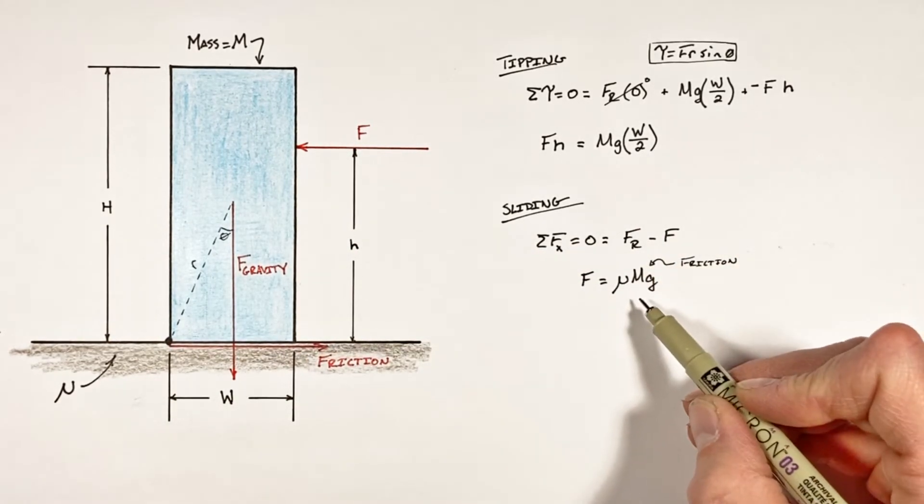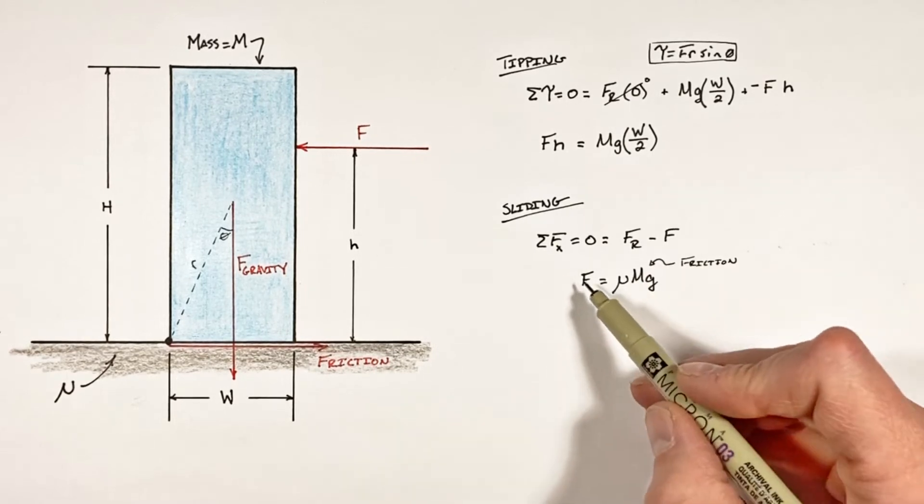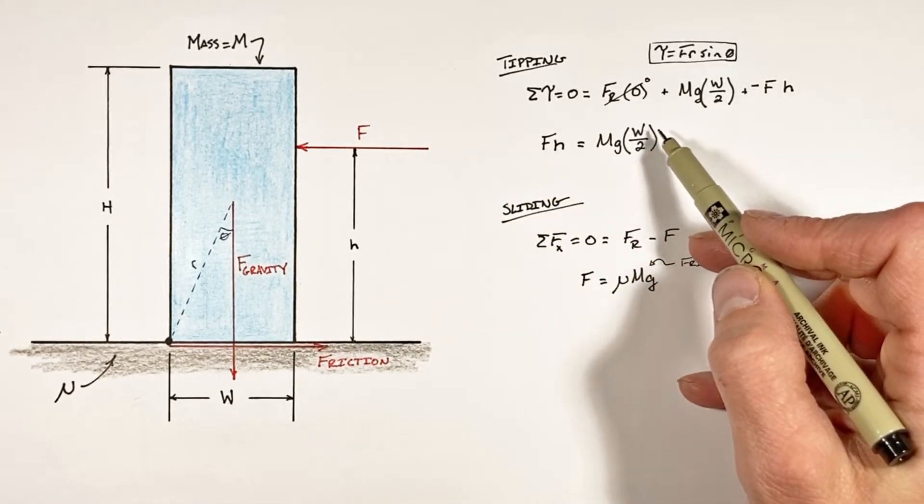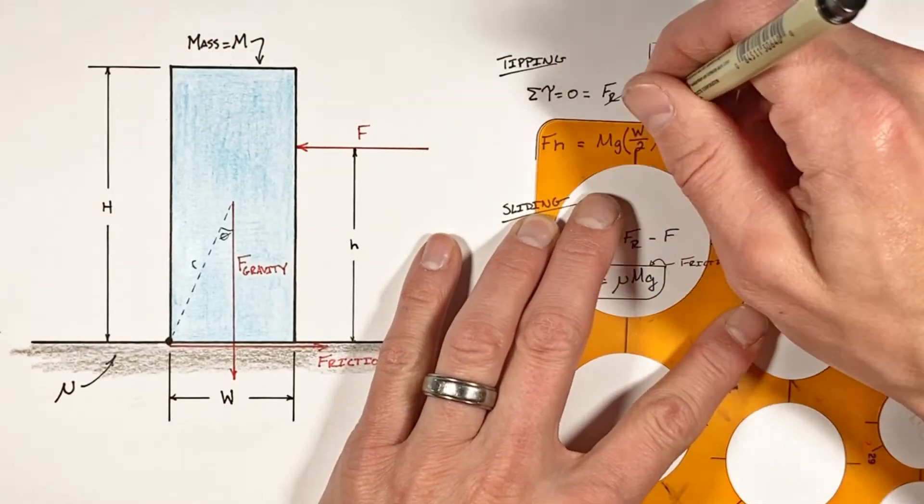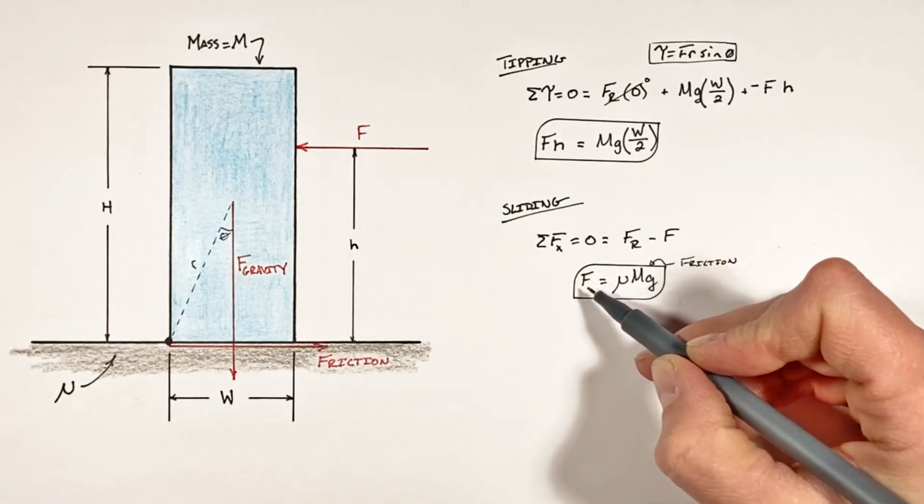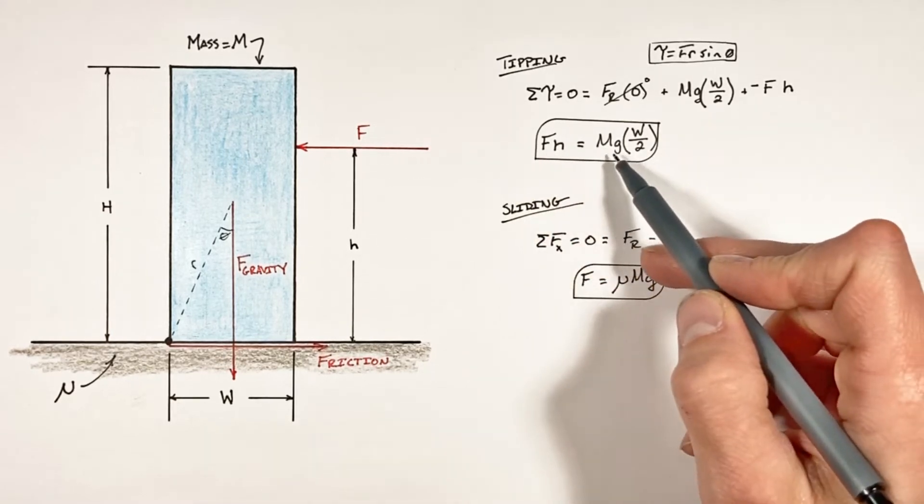Now it might not be completely obvious what we've set up here, but what we actually have are two equations now which can be used to solve for this one value h. So if we substitute this equation for F into our equation for tipping...